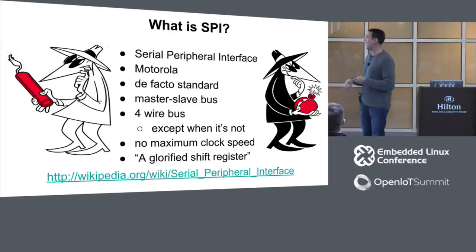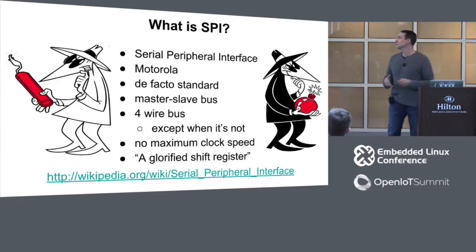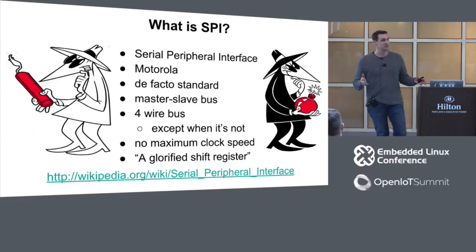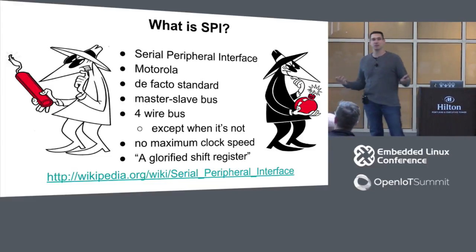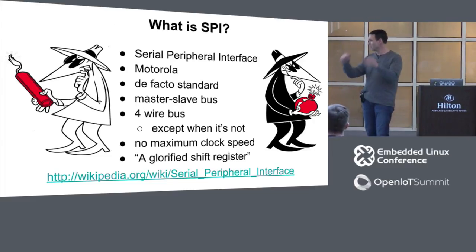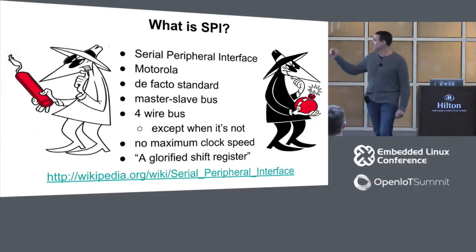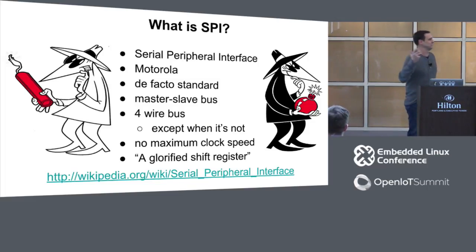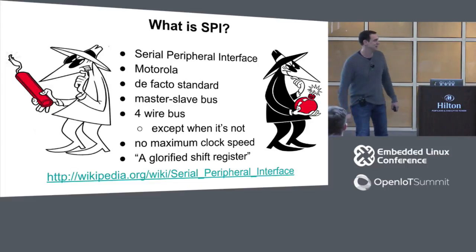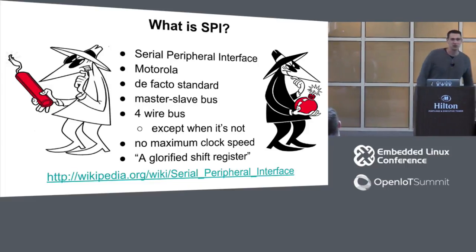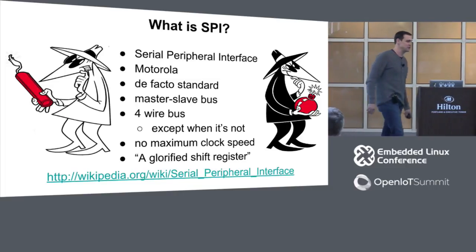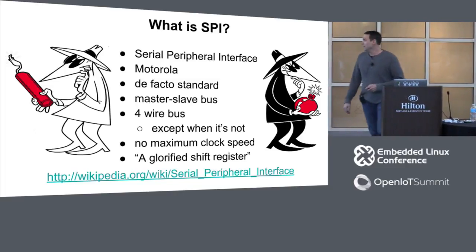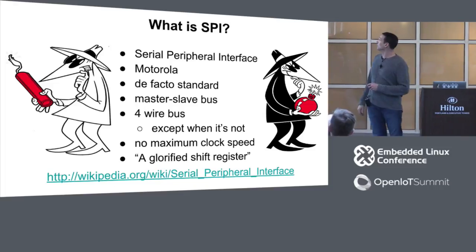SPI is a master-slave bus, a four-wire bus except when it's not — nothing is simple. There's no maximum clock speed, so we can go maximum ludicrous speed. One joking comment about SPI itself is that it's just a glorified shift register, or a shift register with side effects. For more gory detail, you can go to the usual source of knowledge — Stack Overflow — and hope that people haven't defaced the page.